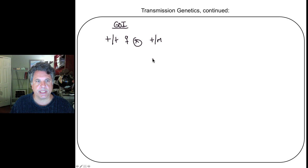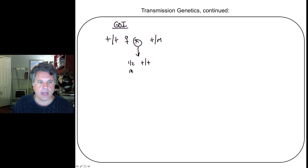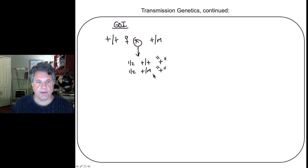We know what our ratio of genotypes in the offspring will be: one half of the offspring will be homozygous for the wild type allele, and one half will be heterozygous, carrying the mutant allele and the wild type allele. In this case, we have a wild type phenotype for the homozygous wild type offspring and also a wild type phenotype in the heterozygote. So we say the wild type allele is dominant to the mutant allele — we don't see a mutant phenotype.